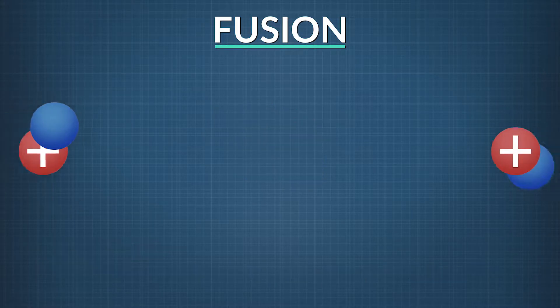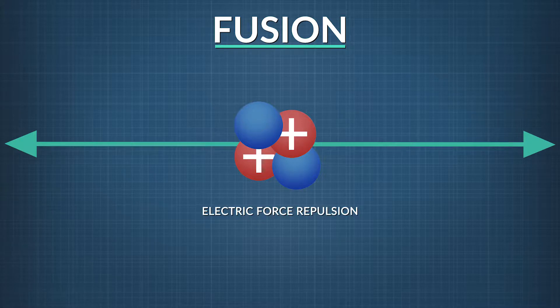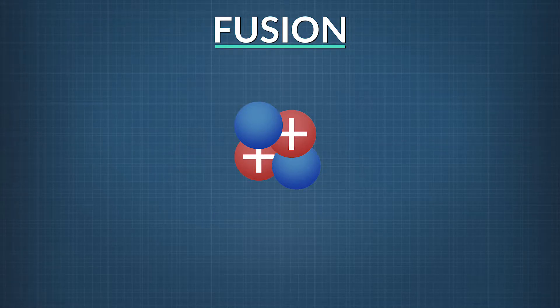For this to happen, the nuclei have to be moving at very high speeds because the repulsive electrical force between the two positively charged nuclei that would normally cause them to repel each other must be overcome. The binding energy that keeps all those protons and neutrons in the nucleus is released during nuclear fusion, just like it is with nuclear fission.